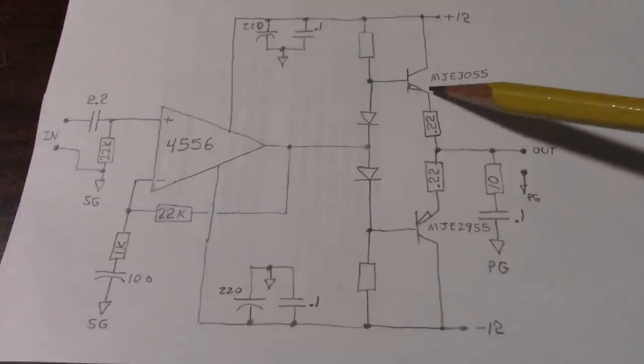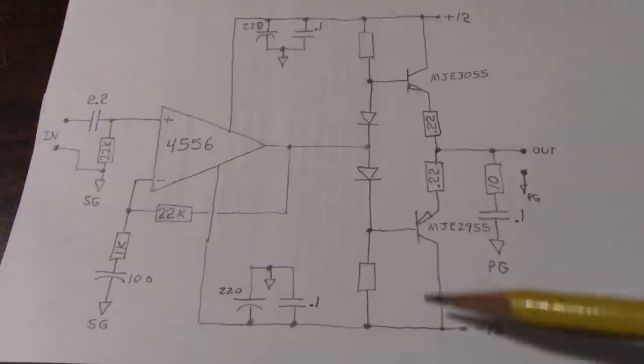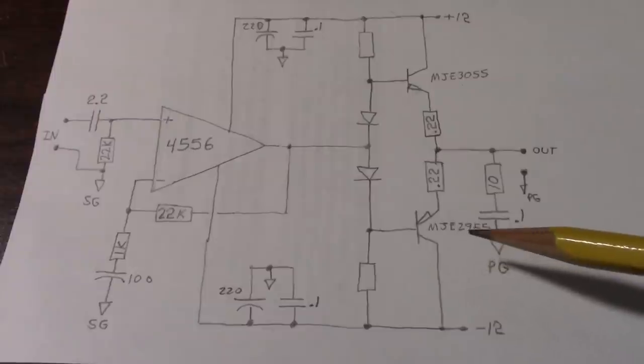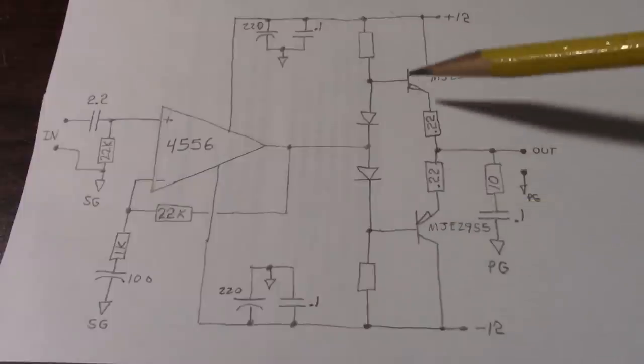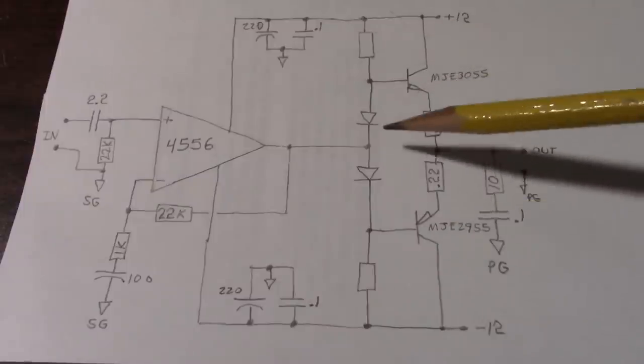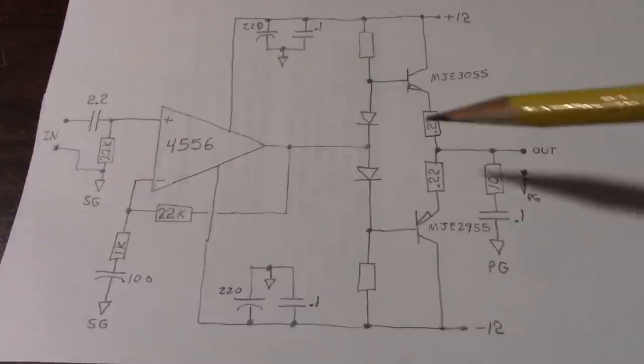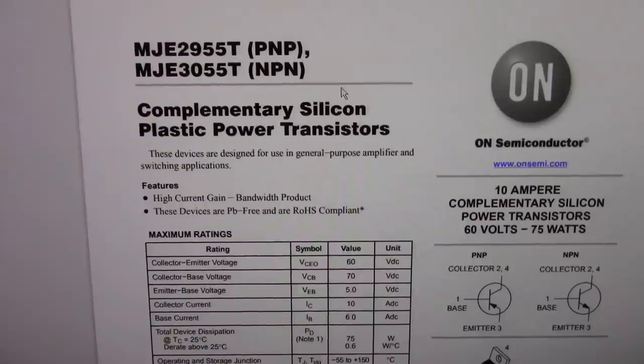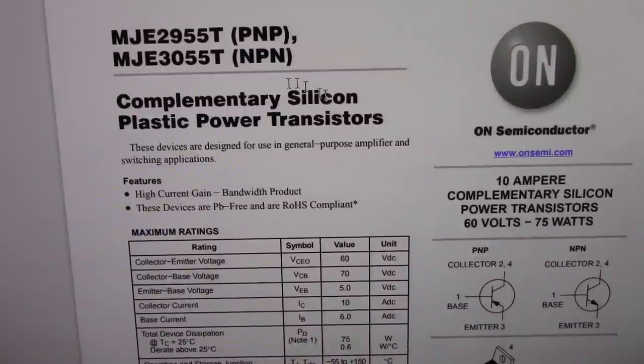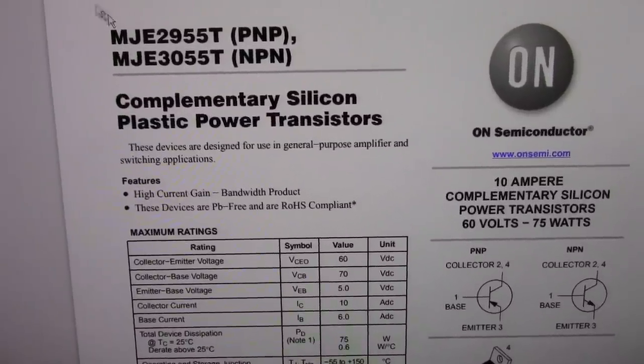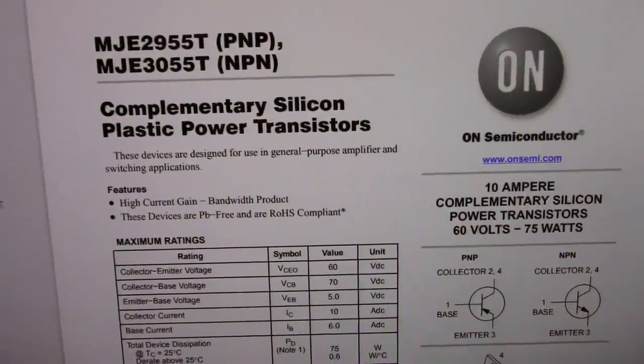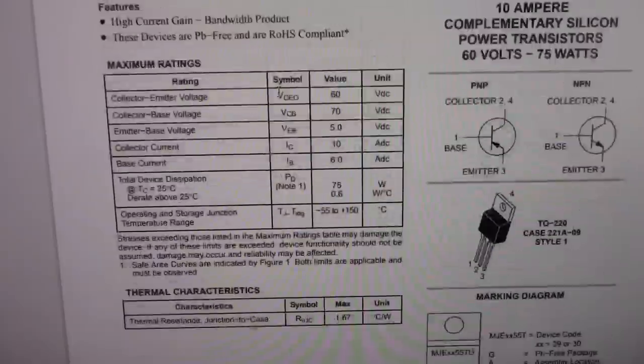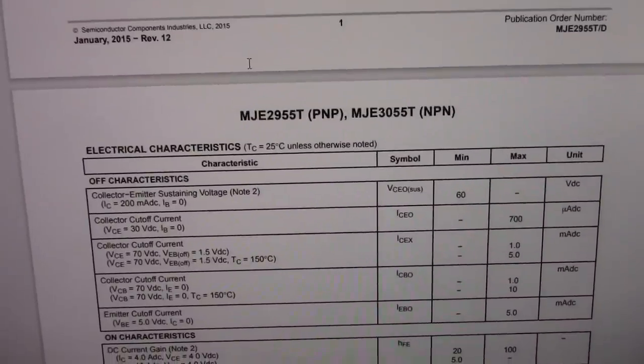Now I'm going to use these MJE3055 and its complement MJE2955. So I need to go look at the data sheet and see what the gain is on these things. So I can calculate how much current I need to drive these to get our 3 amps. Well this is where the data sheet comes in handy. And there's both transistors right on one data sheet. And I know the voltages and the currents and all that. We're fine there. But I need to know that gain.